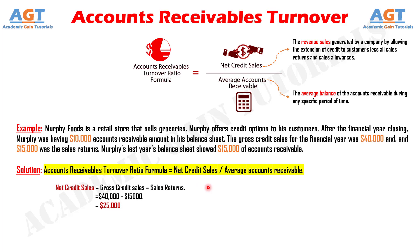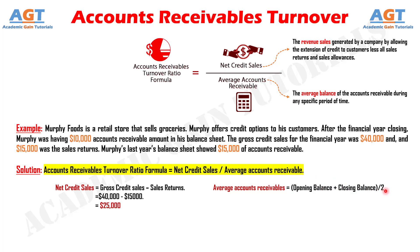Now, Murphy's average accounts receivable can be calculated by taking an average of accounts receivable. That is, average accounts receivable equals the sum of opening balance and closing balance divided by 2. Here, the opening balance is $10,000 and the closing balance is $15,000.